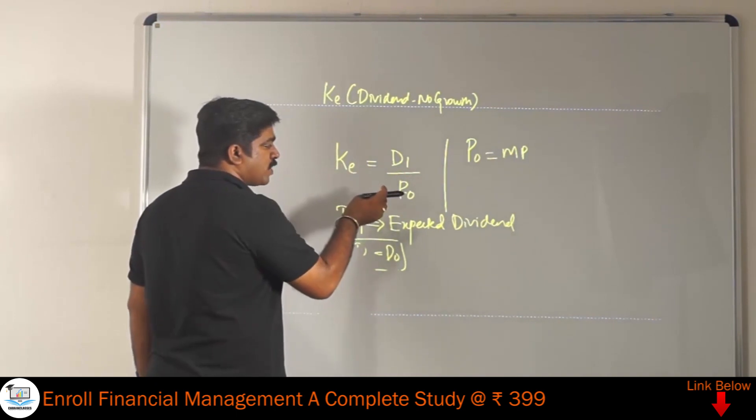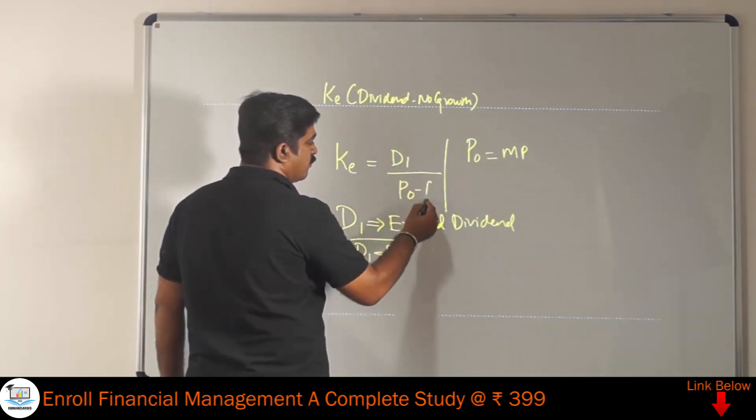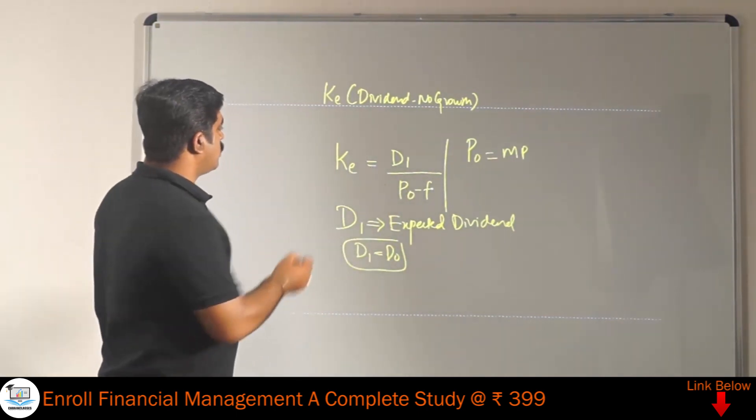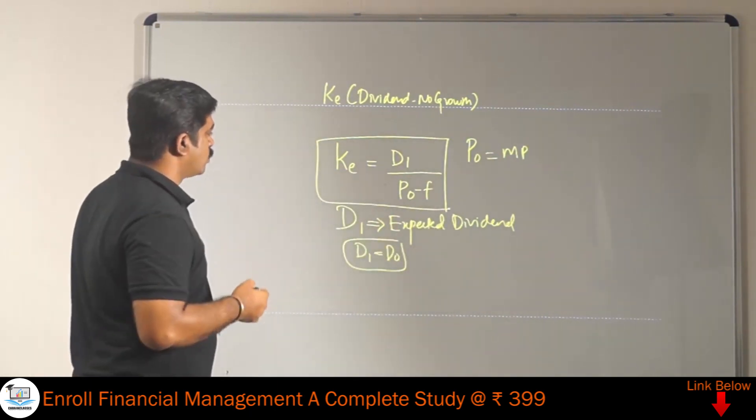If there is any flotation cost associated with the issue of equity, then that has to be deducted. In such case, the formula will be modified: D1 divided by P0 minus F, where F stands for flotation cost. This is the cost of equity formula when following dividend model no growth.